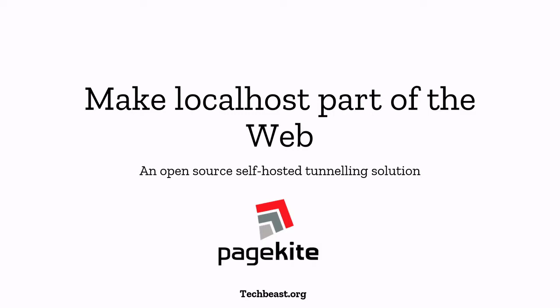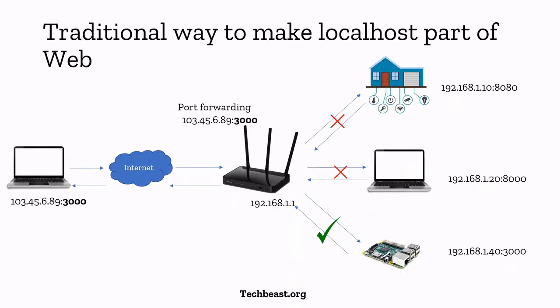From today you can make it a part of the web using the PageKite service. So this is the traditional way to make localhost part of the web — it's a complex way of doing things. The router will always have an external IP address and an internal IP address. The external IP is always assigned by your ISP, and the public IP address is not static because static IP is always expensive, so this public IP keeps changing frequently.